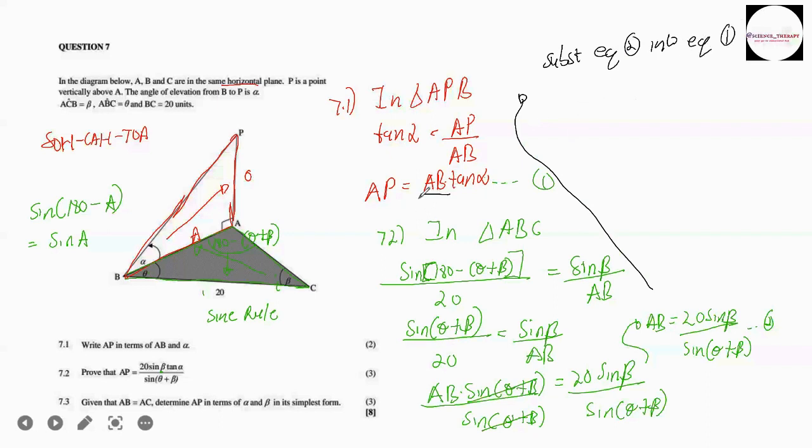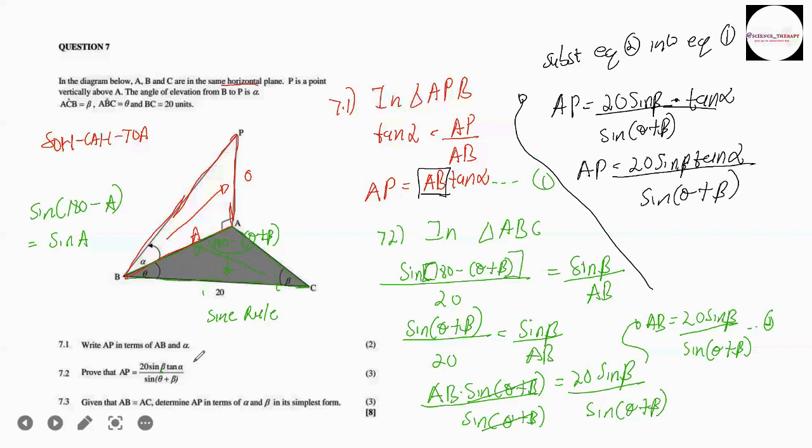So in the place of AB, I will substitute this whole expression. So that means I will have AP is equals to 20 sine beta over sine theta plus beta. But then remember, I'm left with this tan alpha here. So that's multiplied by tan alpha. And then just like that, you can see that my AP is 20 sine beta tan alpha over sine theta plus beta, which is exactly what we were trying to prove here. So that's how you were supposed to go about it. And then, yeah, this was only for three marks. So you might say that they were a bit unfair in terms of the mark allocation. But then it is what it is. At the end of the day, you were just supposed to prove that.